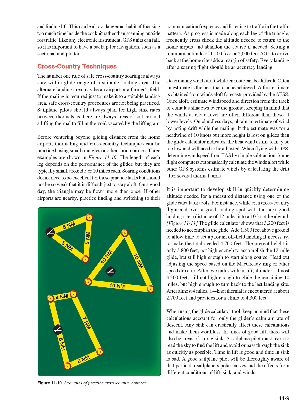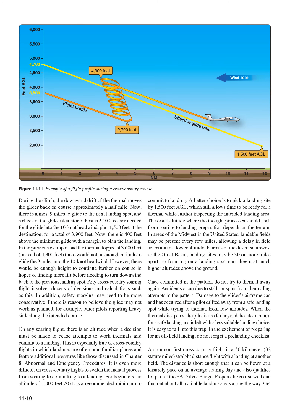When using the glide calculator, keep in mind that calculations account only for the glider's calm-air rate of descent. Any sink can drastically affect these calculations. A good sailplane pilot will be thoroughly aware of the polar curves and effects of different conditions of lift, sink, and winds. During the climb, downwind drift moves the glider back on course approximately half a mile. A check of the glide calculator then indicates 2,400 feet needed for the 9-mile glide into the 10-knot headwind, plus 1,500 feet at the destination—total 3,900 feet, with 400 feet above minimum.